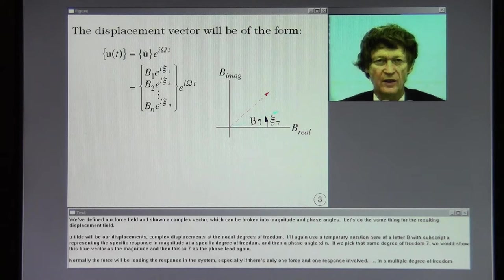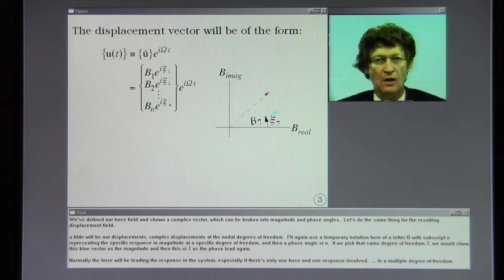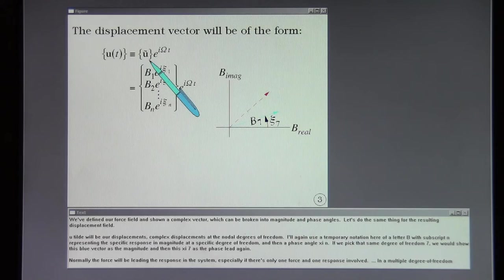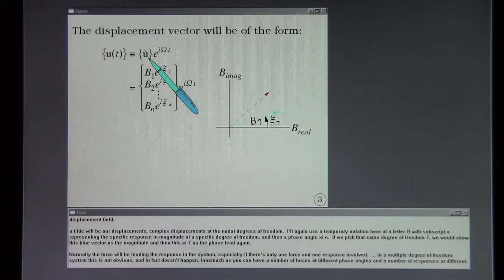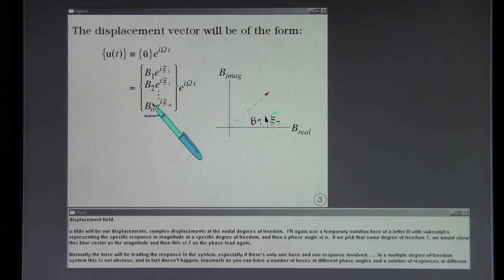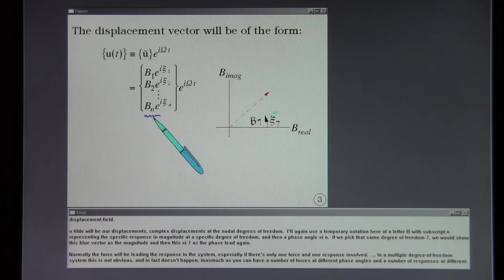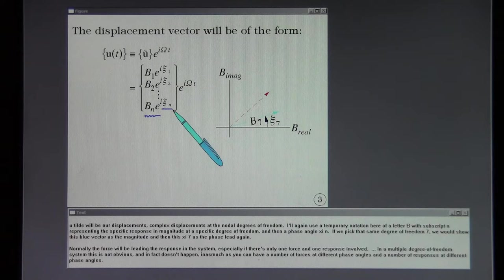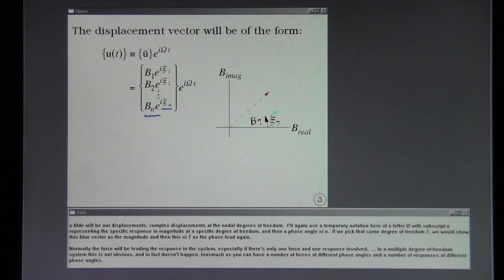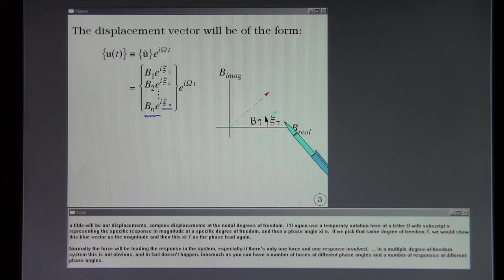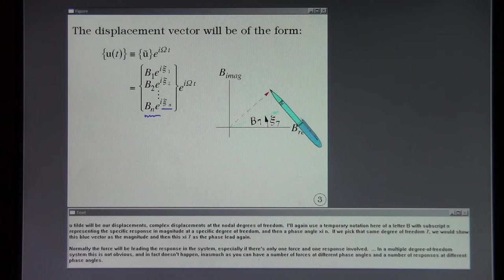We've defined our force field and shown a complex vector which can be broken into magnitude and phase angles. So let's do the same thing for the resulting displacement field. U tilde will be our displacements, complex displacements at the nodal degrees of freedom. I'll again use a temporary notation here of a letter B with subscript N representing the specific response magnitude at a specific degree of freedom. And then a phase angle xi n. If we pick that same degree of freedom 7 we would show this blue vector as the magnitude and then this xi 7 as the phase lead again.